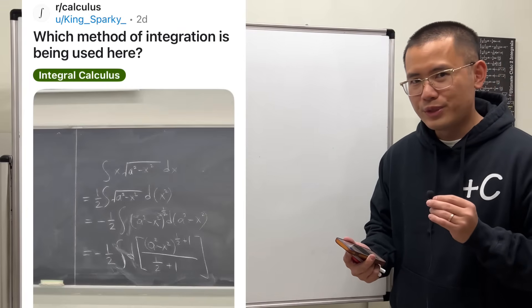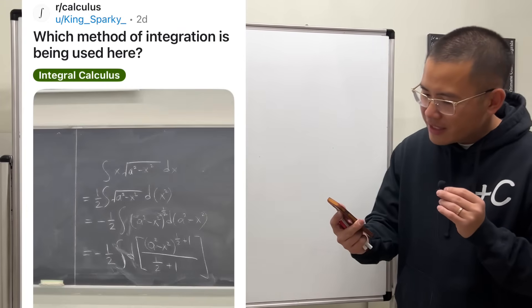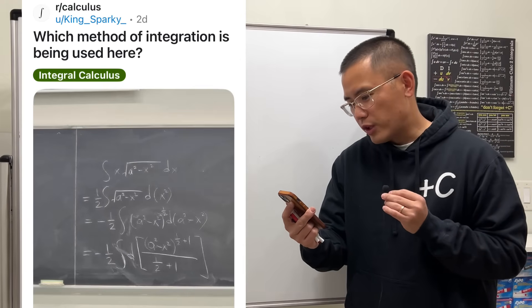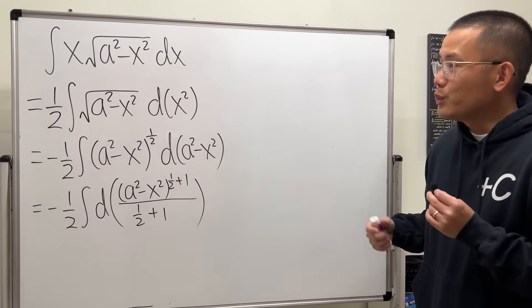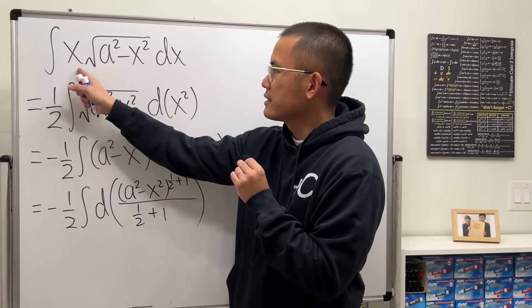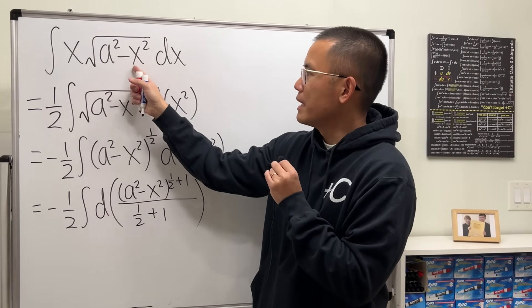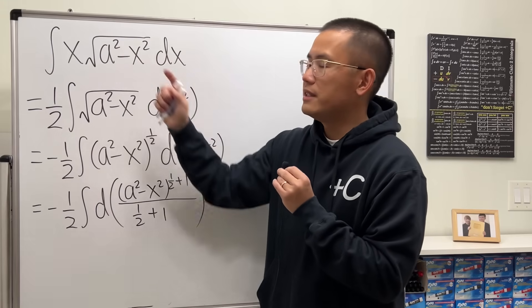So I just saw this on Reddit and I think it's really cool, so check this out. It says, which method of integration is being used here? Let's have a look. We have a pretty standard integral, right? The integral of x times square root of a squared minus x squared dx, and the a is just a constant.